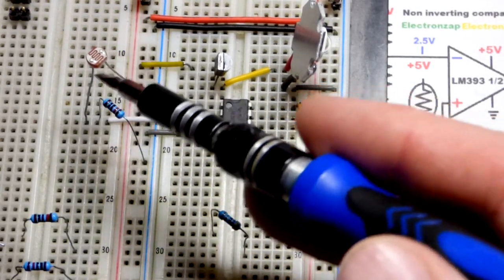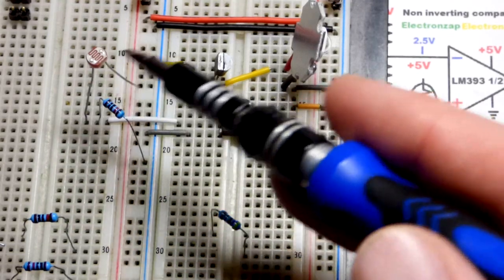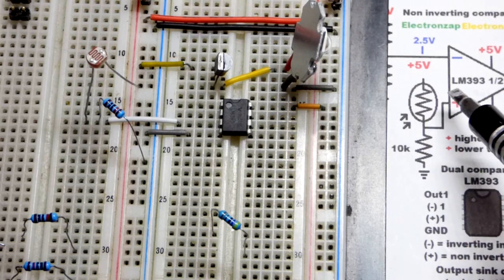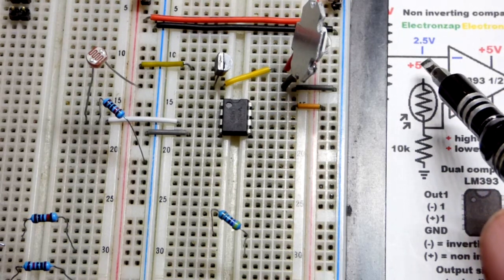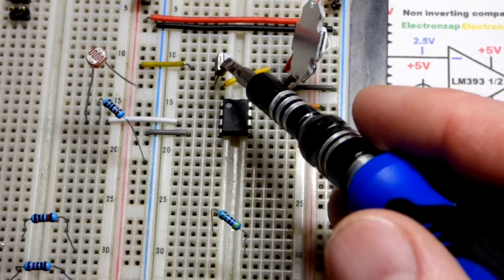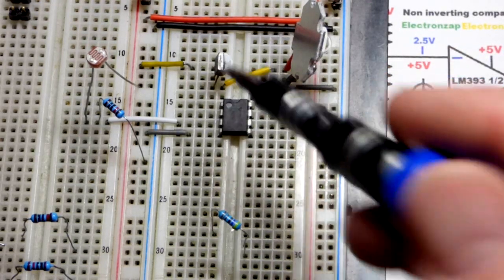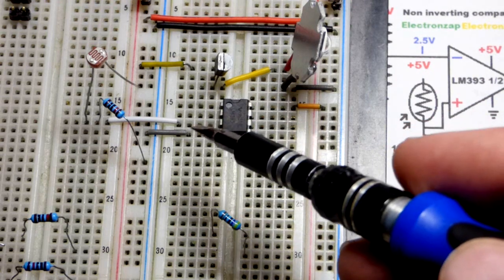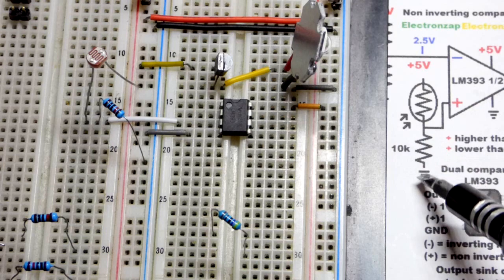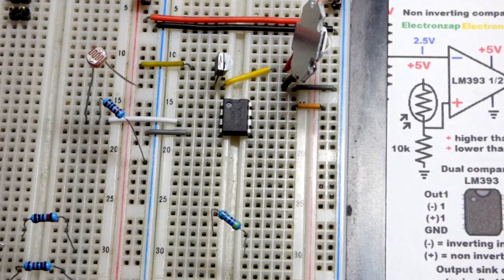The light dependent resistor conducts better, less resistance when more light is falling on it, and so it raises the voltage. Above 2.5 volts we have a high output which, because it's a PNP bipolar junction transistor, turns the transistor off in this case. And 10 kilohm going to ground. You can adjust the sensitivity by adjusting the value of the resistor there.